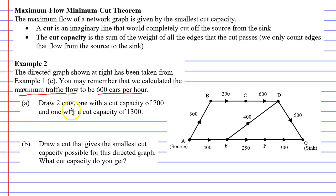So first of all, question A says draw two cuts, one with a cut capacity of 700 and one with a capacity of 1300. So I'm going to show you what cut capacity is here. So I'm going to do my cuts in red. So here is a cut which has a cut capacity of 700. First of all, a cut needs to completely separate the source from the sink. There is no way that cars can flow from A to G without passing through this cut. So this is a good cut that I've made.